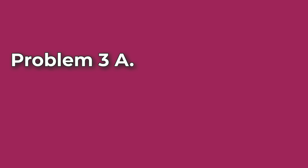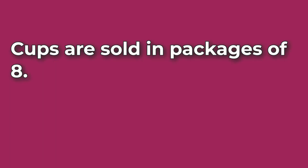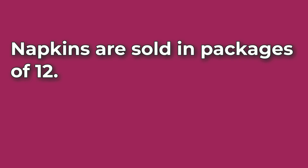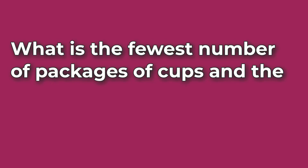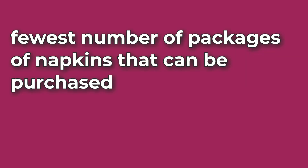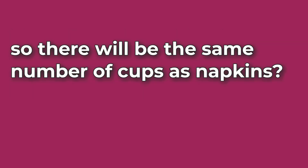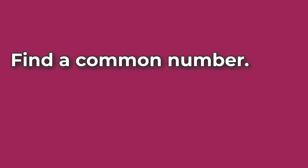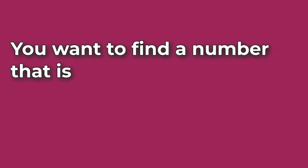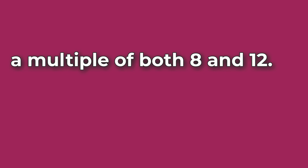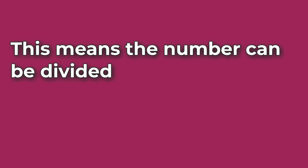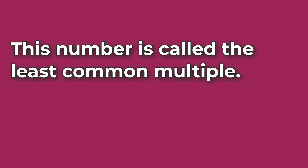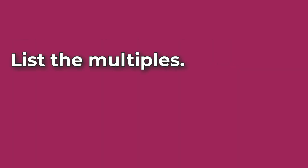Problem Number 3A. Cups are sold in packages of 8. Napkins are sold in packages of 12. What is the fewest number of packages of cups and the fewest number of packages of napkins that can be purchased so there will be the same number of cups as napkins? To solve this problem, find a common number — you want to find a number that is a multiple of both 8 and 12. This number is called the least common multiple.